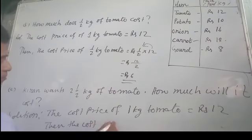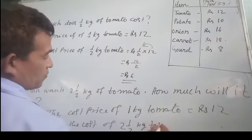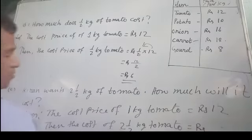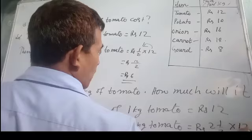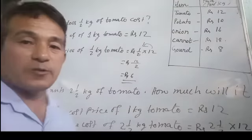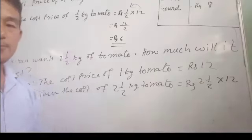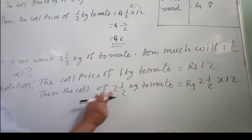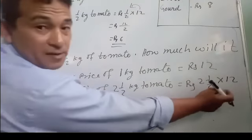Then the cost price of 2 and 1/2 kg of tomato will be rupees 2 and 1/2 into 12. So can you see this? I will adjust. So now, the cost of 2 and 1 half kg of tomato is rupees 2 and 1/2 multiplied by 12.